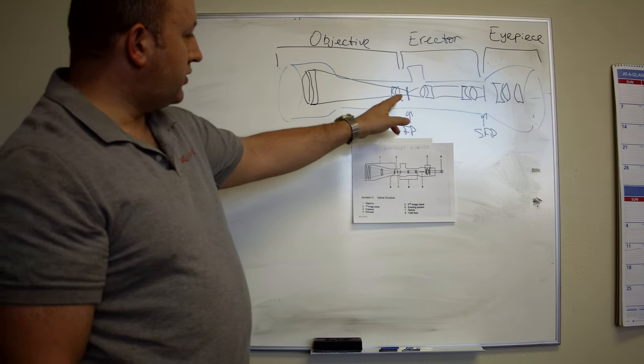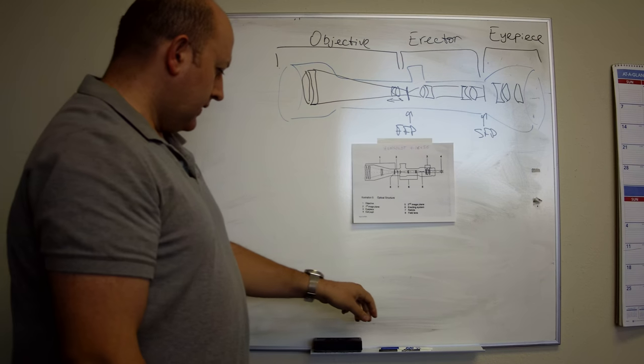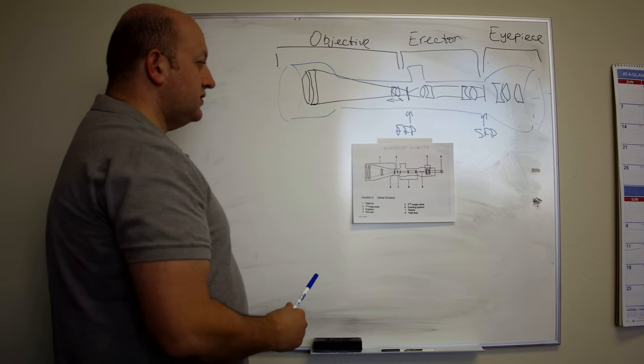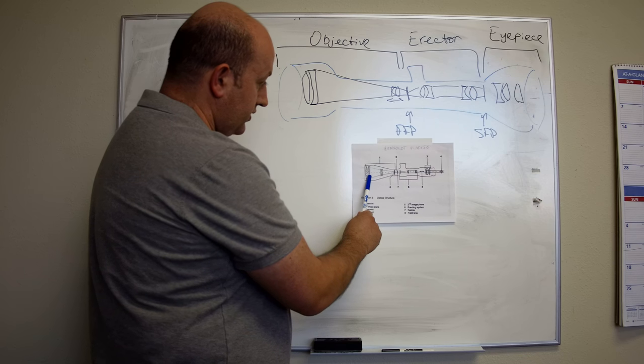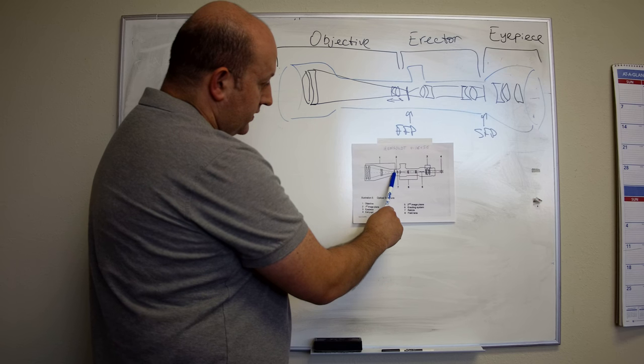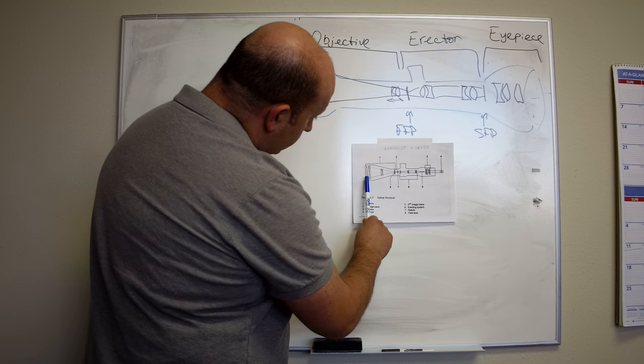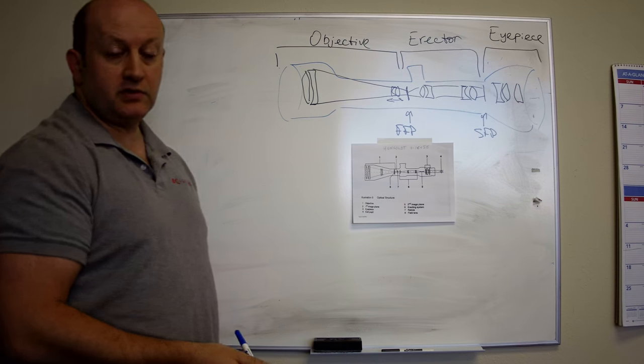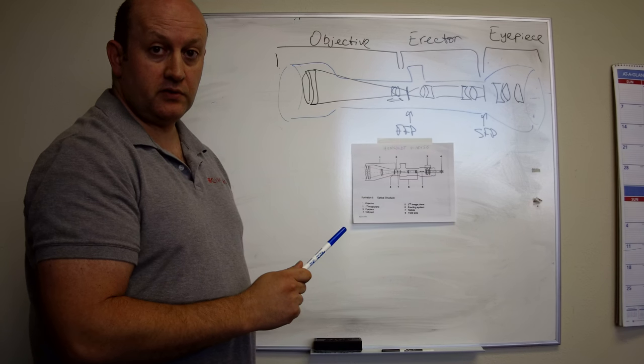It was a manual for the 4-16x56 scope, which is still one of the nicer performing scopes in terms of optics. It shows in good approximation the optical elements in the 4-16x56 Hensoldt. For its time, this is one of the shorter designs in terms of overall length. So I put it up here. I hope you can see it reasonably well.